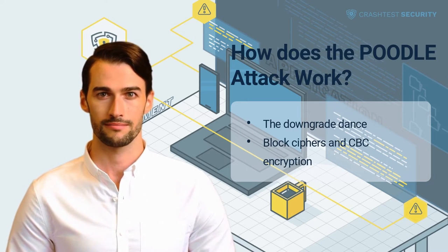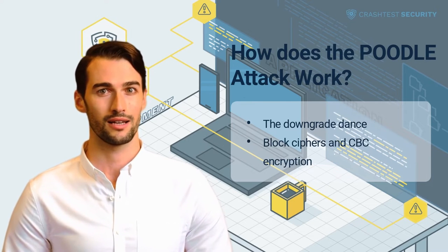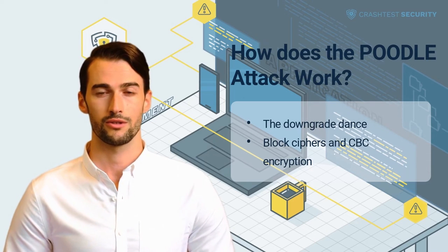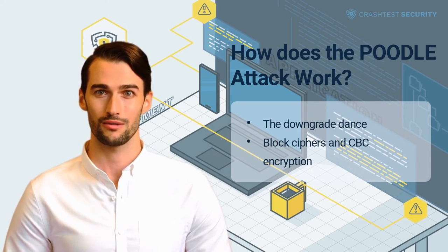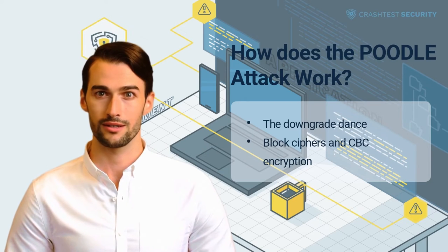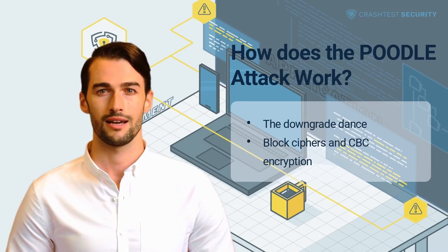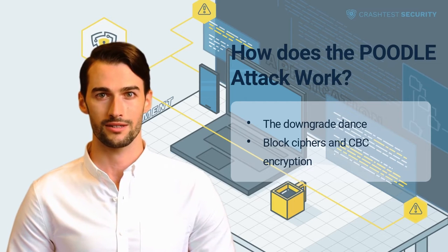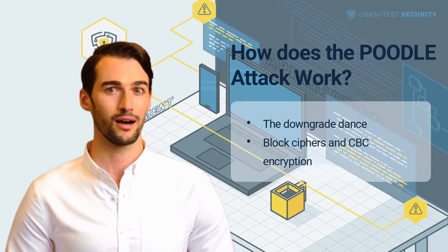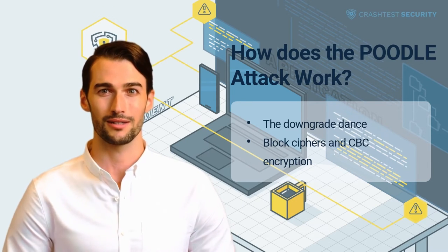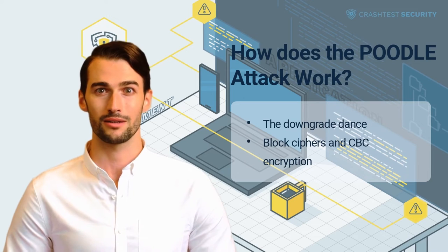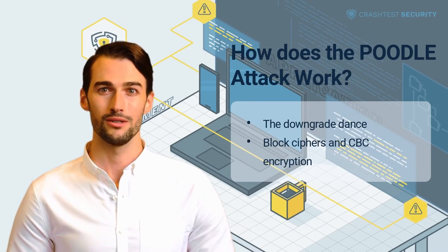To understand the padding oracle, you must understand how CBC mode encryption works. SSL and TLS protocols allow browsers and servers to use encryption algorithms, also known as cipher suites. These cipher suites contain several different algorithms, including block ciphers such as AES and DES. When block ciphers are used, data is encrypted in fixed-size blocks, so to encrypt data it must be divided into equal blocks. If the data in a block is not enough, padding is added to ensure that the message length equals the standard block size, such as 8 or 16 bytes.